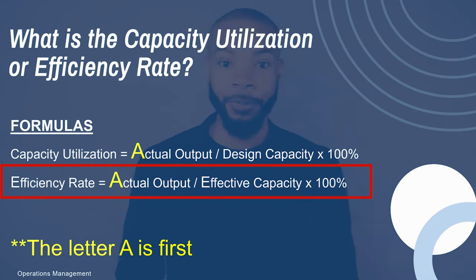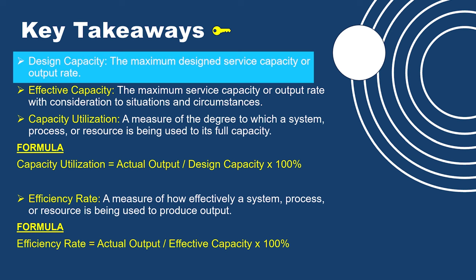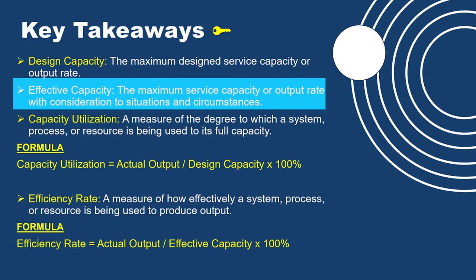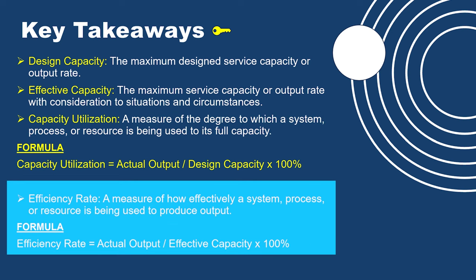Key takeaways: design capacity is the maximum amount you can produce based on how your system or process is designed. Effective capacity is the maximum amount you can produce based on a given set of circumstances — downtime of equipment, number of employees, equipment changeovers, and the products you produce. Capacity utilization determines how much of your capacity you are actually using, and efficiency rate determines how effective you are in using that capacity based on your actual output.